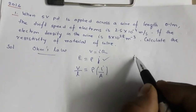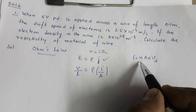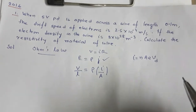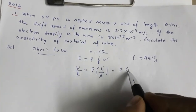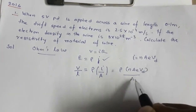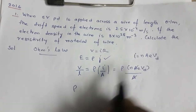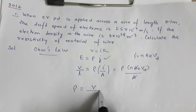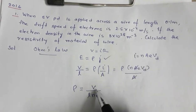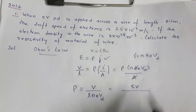Current is related to drift velocity by I = nAeVd, where n is number density of free electrons, A is cross-sectional area, e is charge of electron, and Vd is drift velocity. Substituting into E = ρj, the area A cancels out, giving ρ = V / (L × n × e × Vd). Here V = 5 volt and L = 0.1 meter.